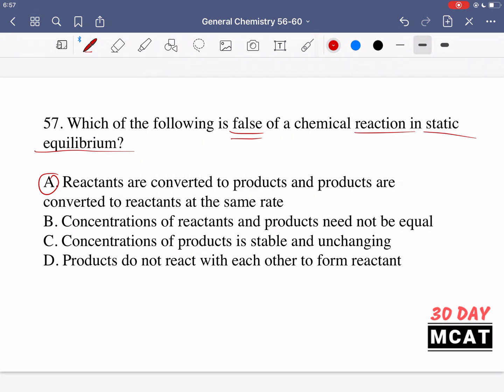Option B says concentrations of reactants and products need not be equal. This can be true, they don't have to be equal just because we're at equilibrium. Option C says concentration of products is stable and unchanging. Yes, this is true of static equilibrium. Option D says products do not react with each other to form reactants. This is also true. So A is the only false statement.